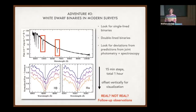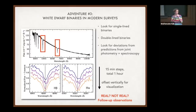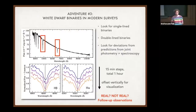I want to spend the rest of the presentation talking about white dwarf binaries and modern surveys. There are three possible ways to look for white dwarf binaries: single-line binaries where you can only see the brighter object wobbling to an unseen companion; double-line binaries where you see both; and potentially looking for deviations from photometric/spectroscopic predictions since binaries should appear a little brighter than single ones.